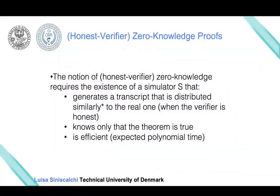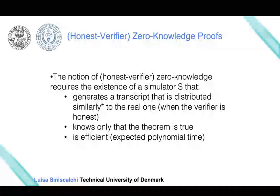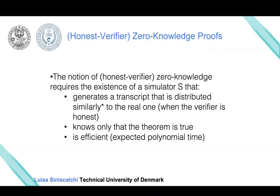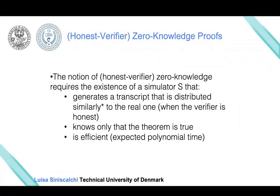An important point to stress is that simulator S does not have access to the witness. In the case of graph isomorphism, it will not have access to the permutation between G and H. The only thing the simulator is allowed to know is that the theorem is true. Finally, we require that the simulator runs in expected polynomial time, meaning almost all the time it will run in polynomial time.